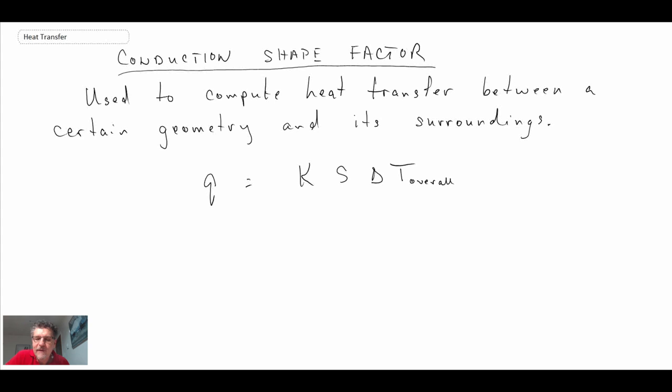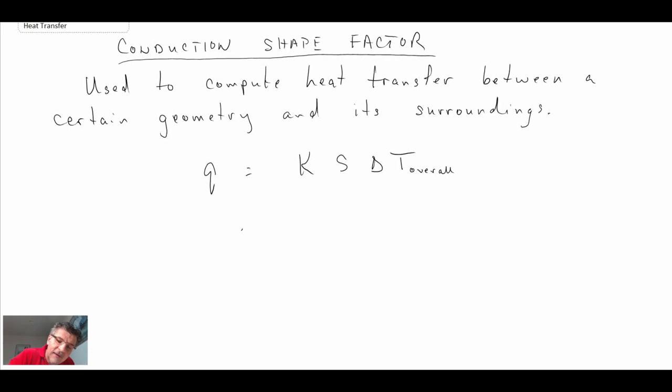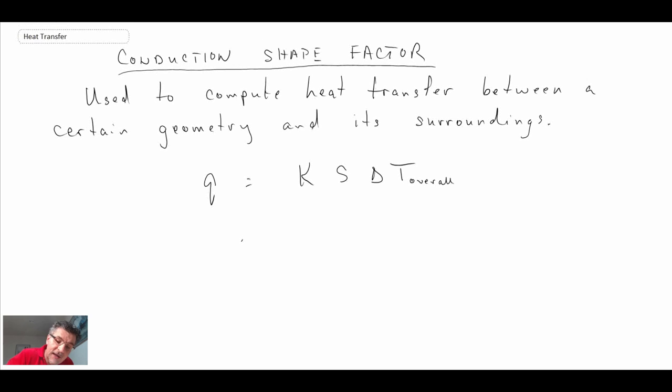What we have in here, K will be the thermal conductivity of the material that we're looking at. S is the shape factor.